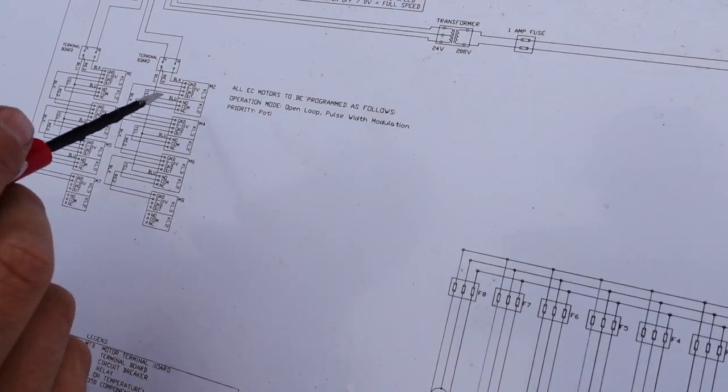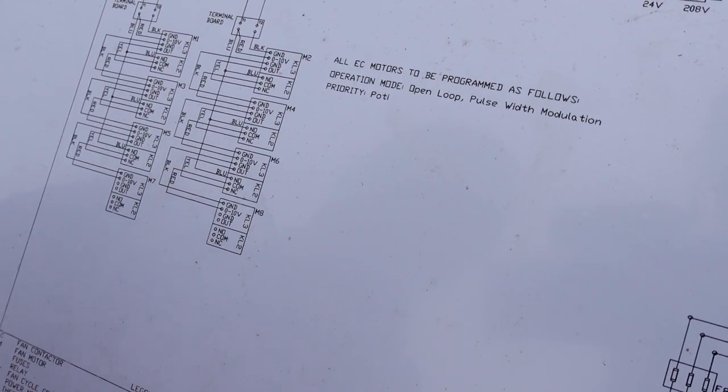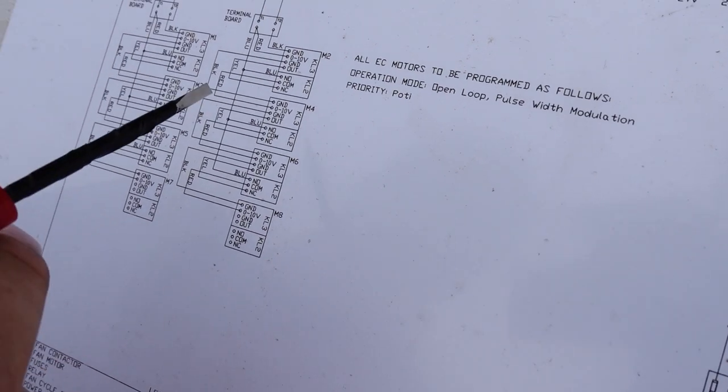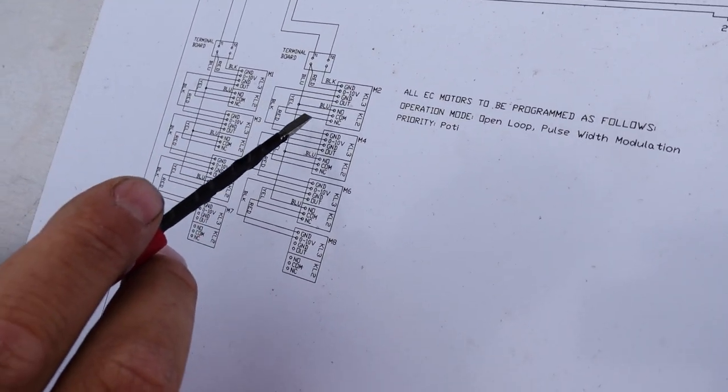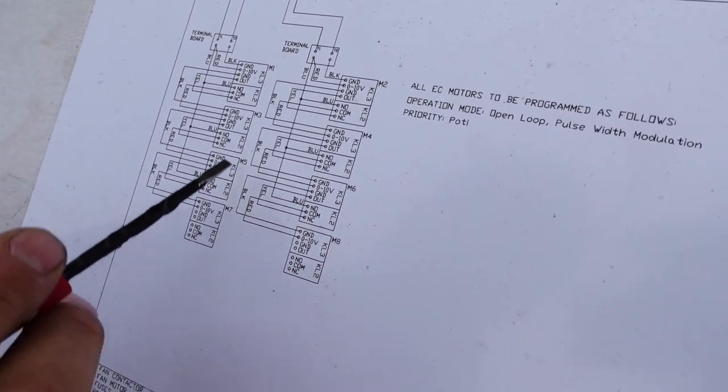So we'll disconnect all the red wires, save them off inside the motor in case it ever needs to go back to the factory configuration. And we're just going to swap the blues and run an additional wire.